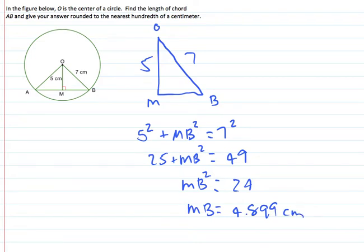Now that's just one half of our chord so we do need to multiply that by 2 in order to get the final answer. So 4.899 times 2 is going to come out to roughly 9.80 centimeters and that's going to be the length of a chord.